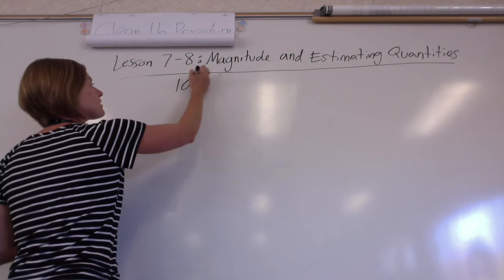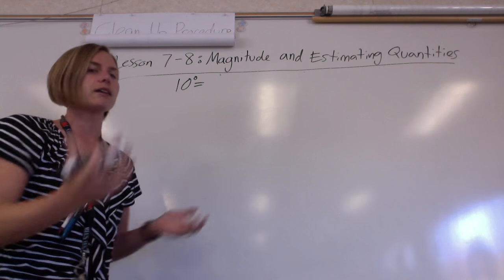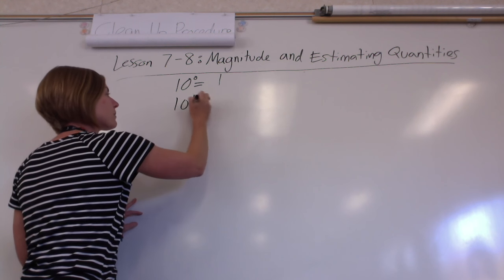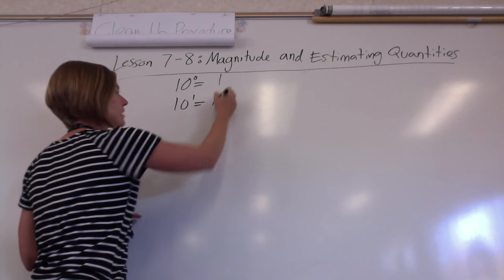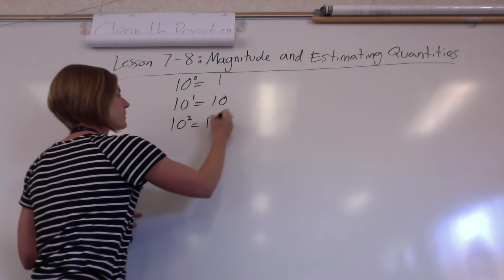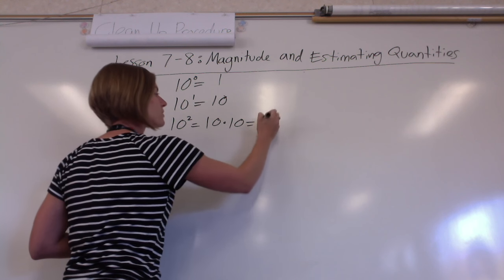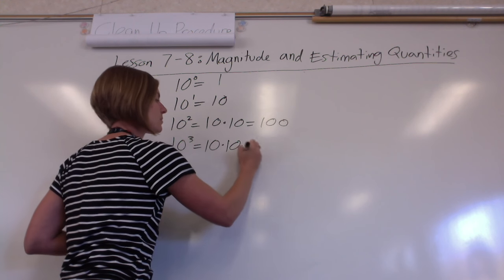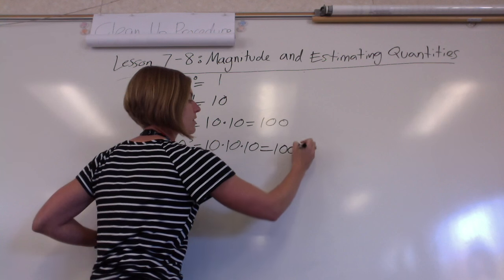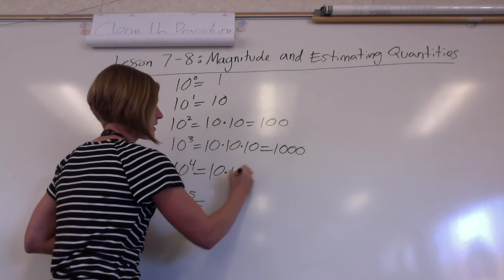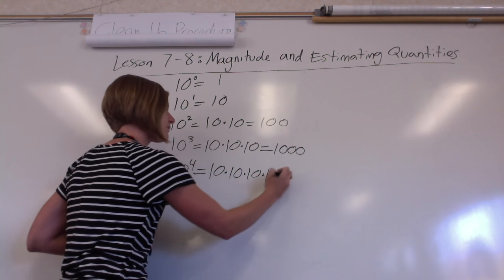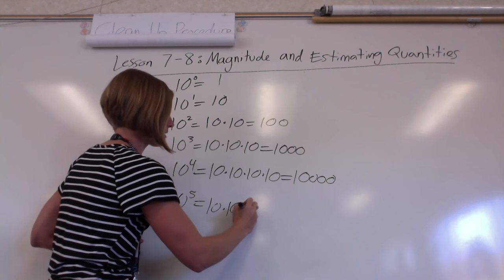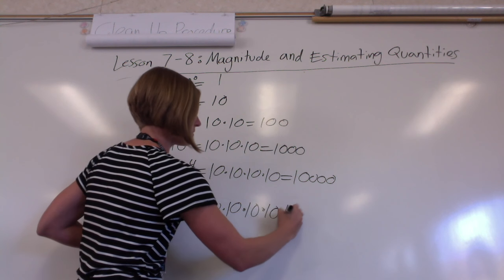Now let's go positive. 10 to a zero means we have zero tens, so that's actually just one. 10 to a positive one means we have one ten. Ten squared means we have two tens multiplied by itself, so that's a hundred. Ten cubed means we have three tens multiplied by itself, so that's a thousand. Four tens multiplied by itself for 10 to the fourth, and five tens multiplied by themselves for 10 to the fifth.